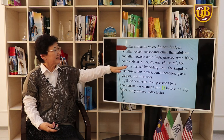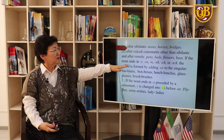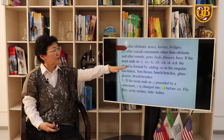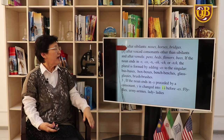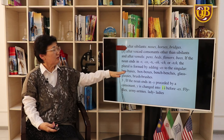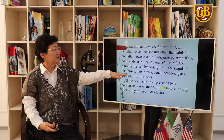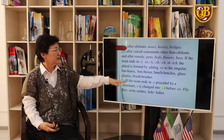If the noun ends in -s, -ss, -x, -sh, -ch, or -o preceded by a consonant, the plural is formed by adding -es to the singular: bus → buses, box → boxes, and so on.